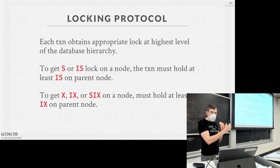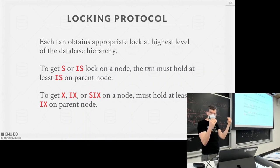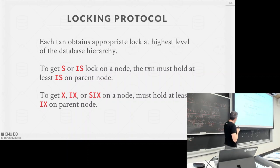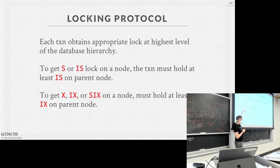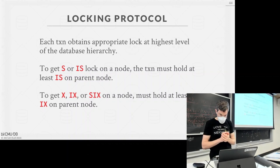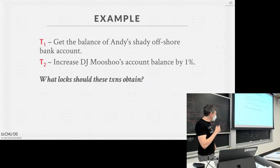The idea is you want to acquire the minimum lock you need at the highest point in the tree. As you get closer to the bottom of the hierarchy, you get the explicit lock. You take intention locks as far down as you can, and at the leaf nodes you acquire the exact shared or exclusive locks. To hold a shared or IS lock on something, you need to hold at least IS on the parent. For an exclusive, IX, or SIX lock, you need to hold at least IX on the parent.